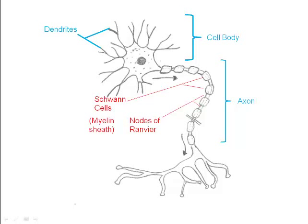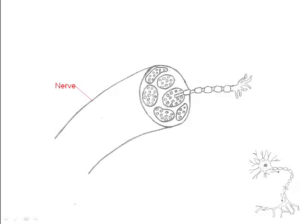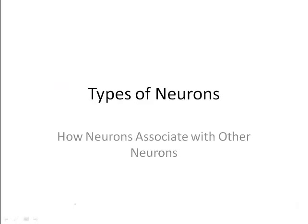An axon conducts nerve impulses away from the cell body toward other neurons and ends at the axon terminals. Nerves are composed of many neurons bundled together. In the next video, we'll look at the different types of neurons and how neurons associate with each other.